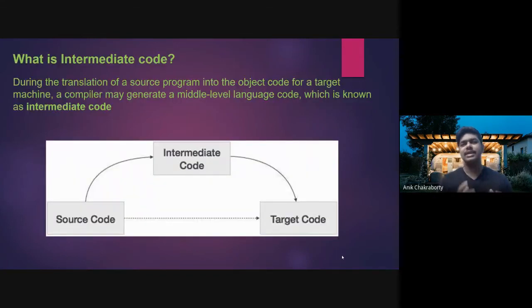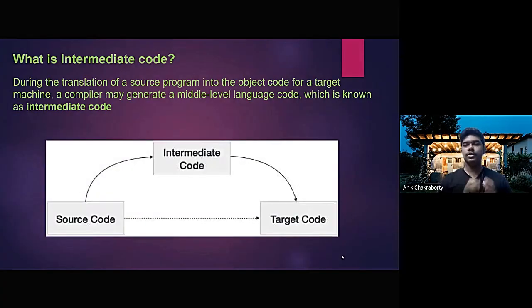We will understand what exactly is an intermediate code. During the translation of a source program into the object code for a target machine, a compiler will generate a middle-level language code which is known as an intermediate code.